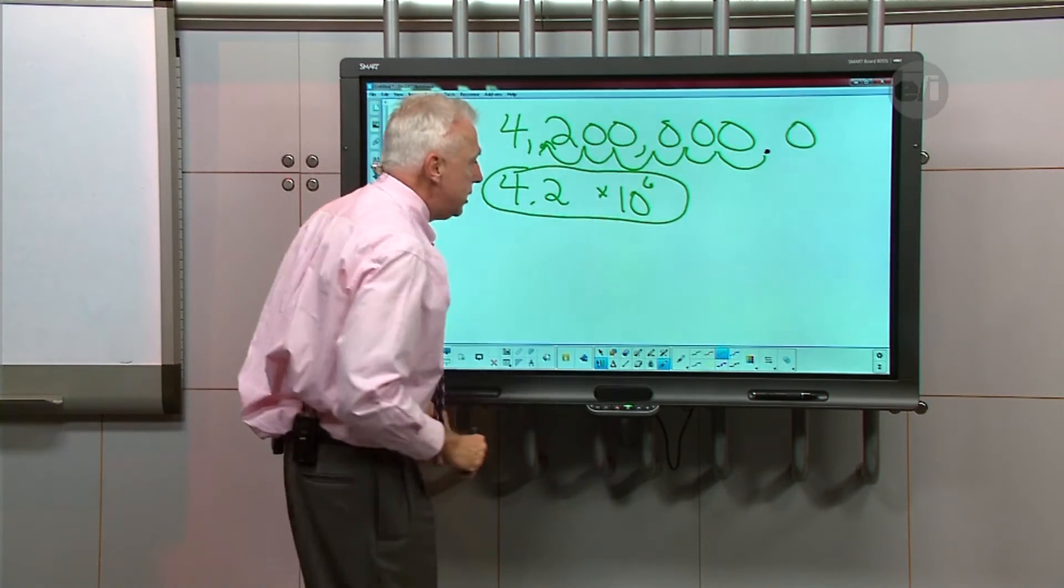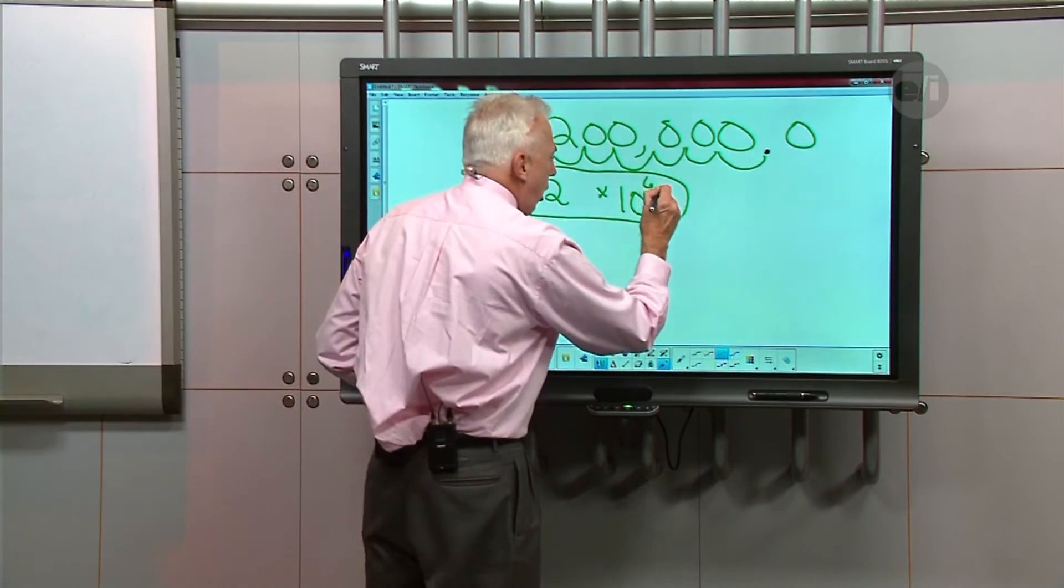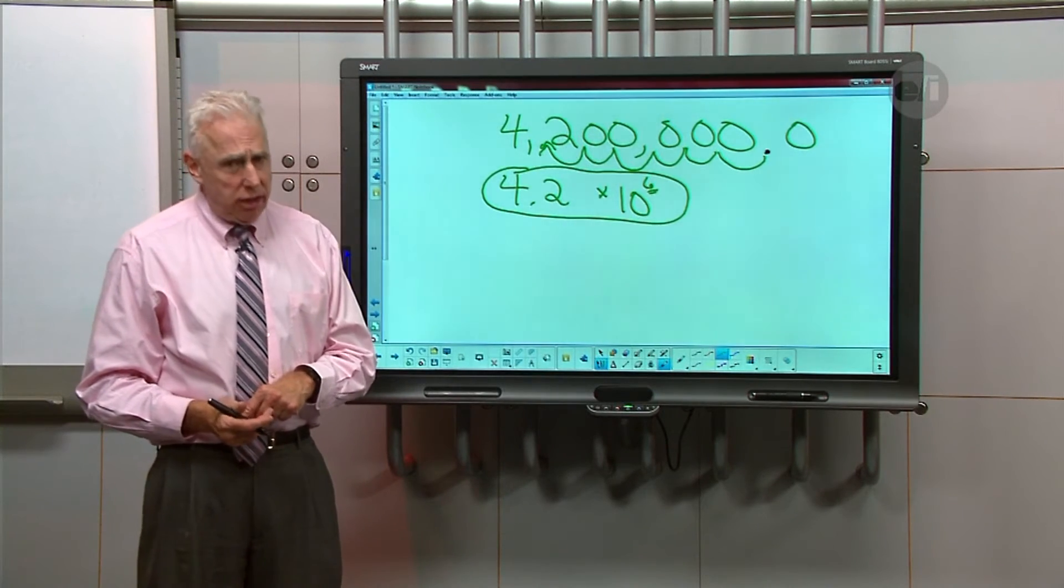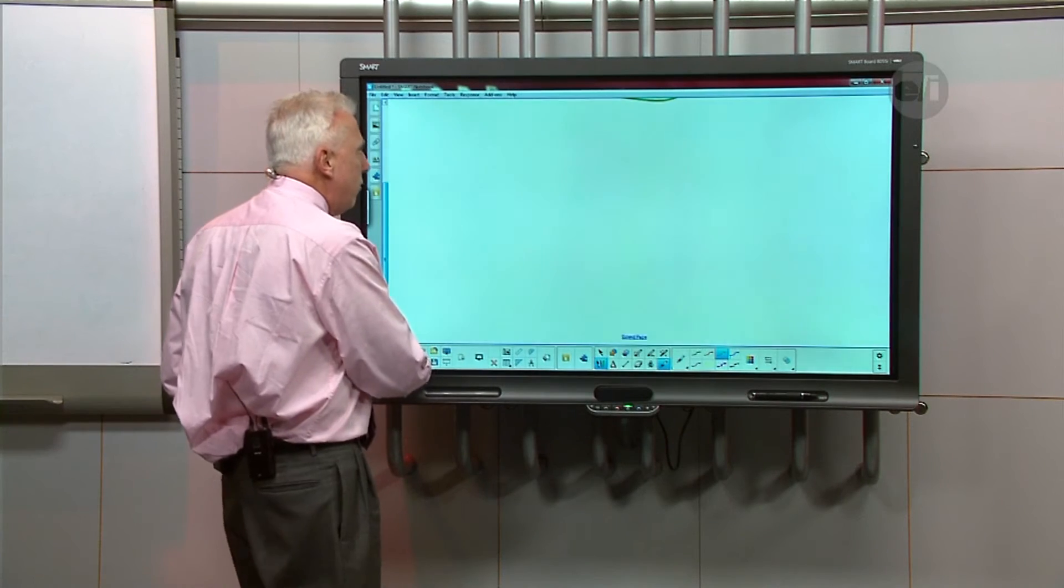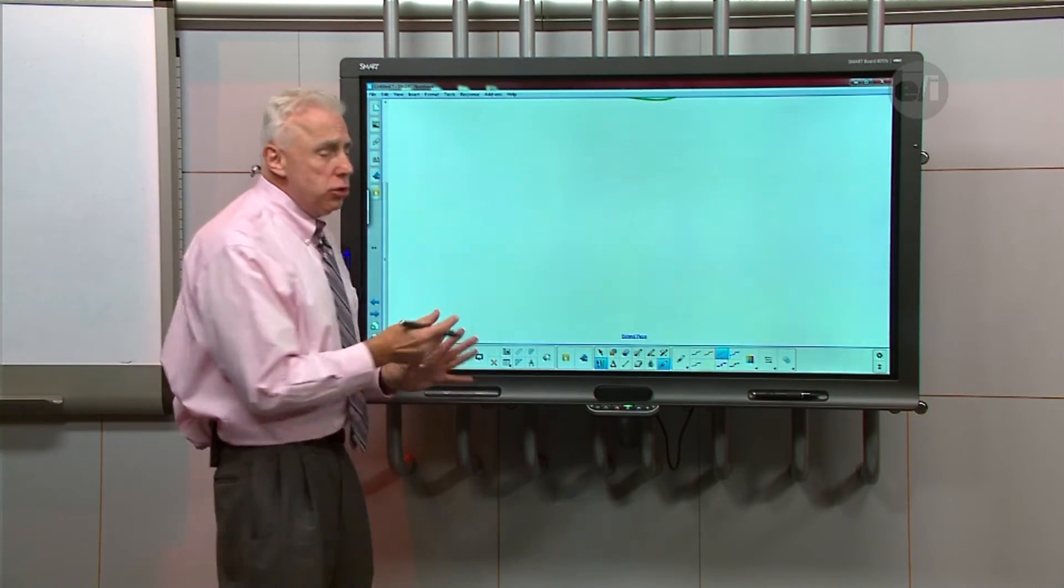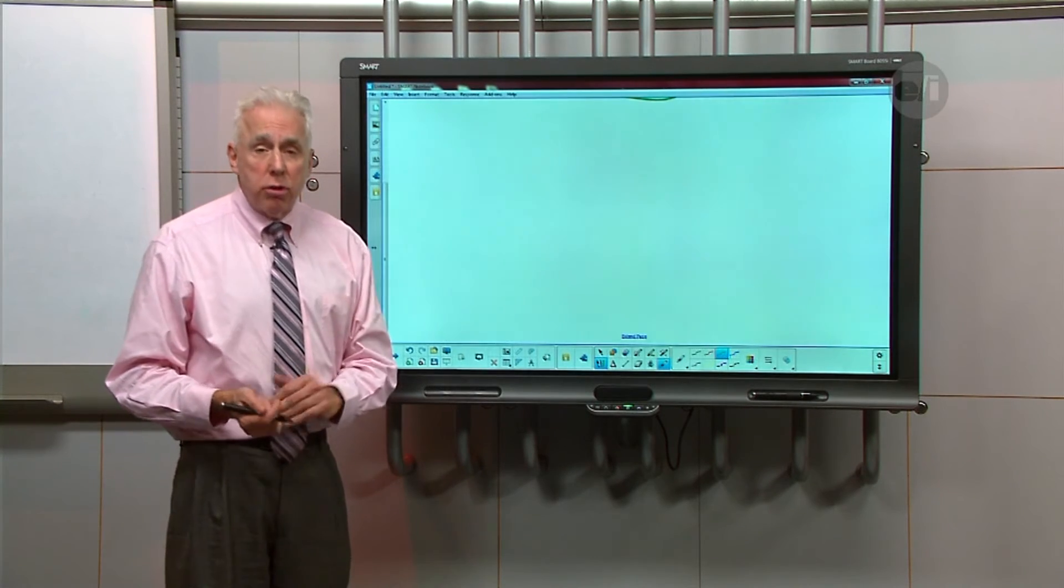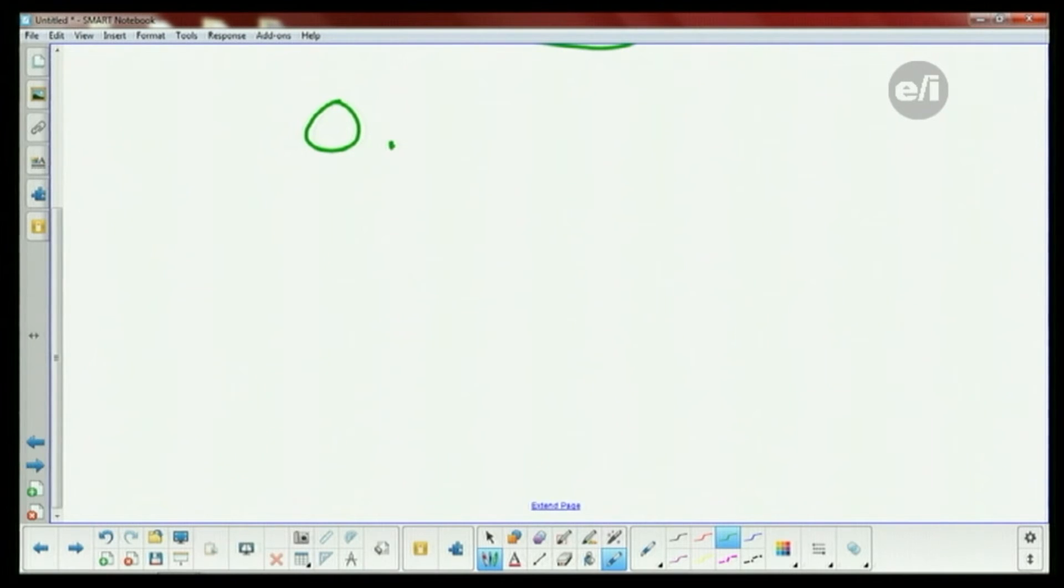But in this case, you've got 4.2 times 10 to the sixth. Now I should note that our exponent is not always going to be positive. Let's do an example where we would have a negative one. And that's usually or always with numbers that are very, very small or numbers that are less than one. So let's say, for example, we have 0.076.